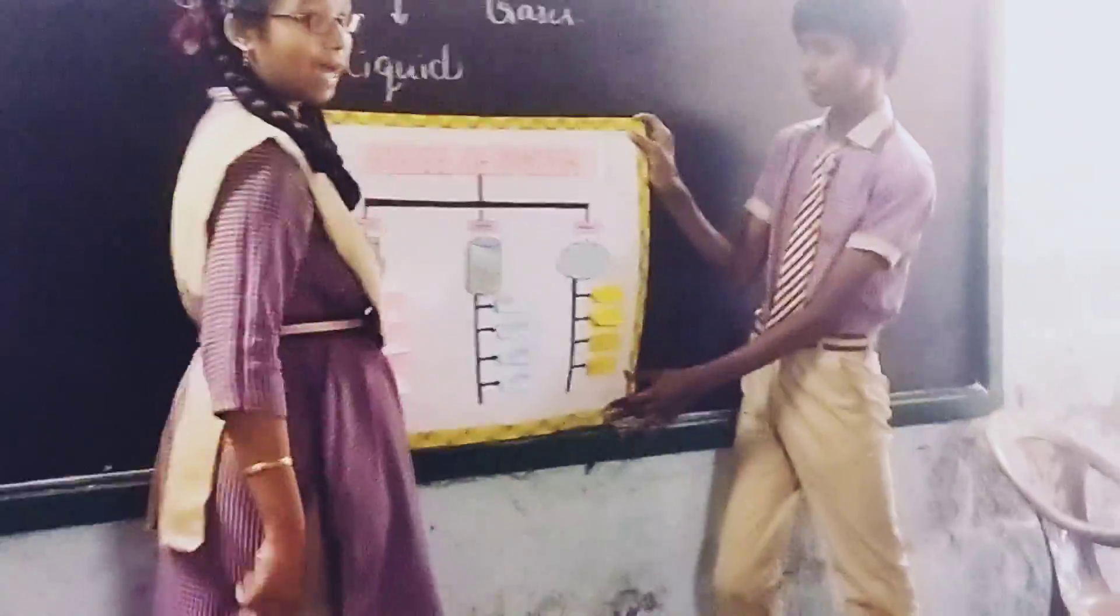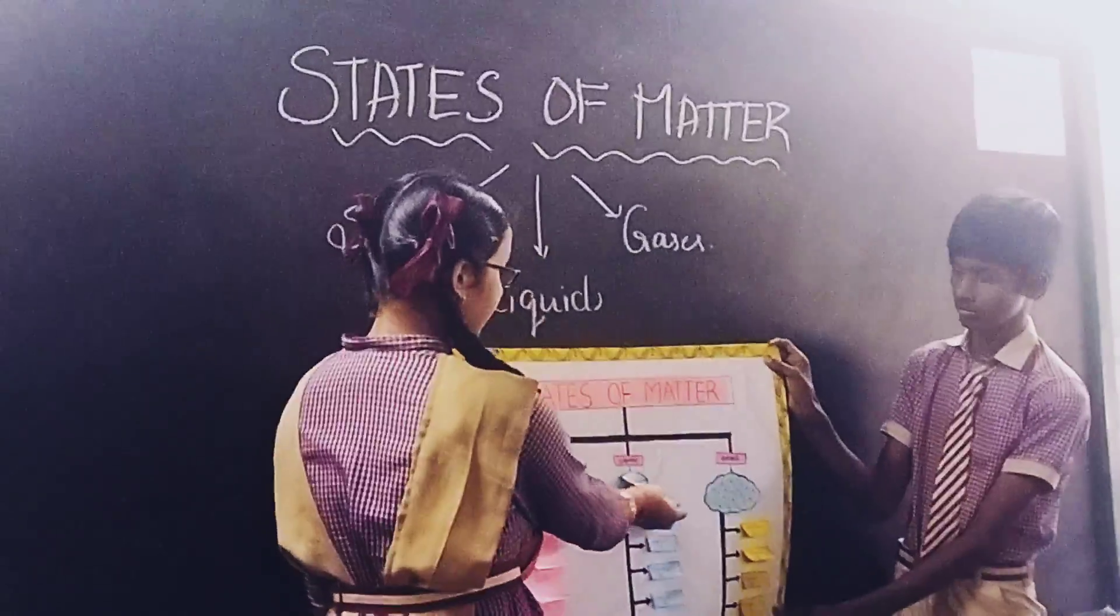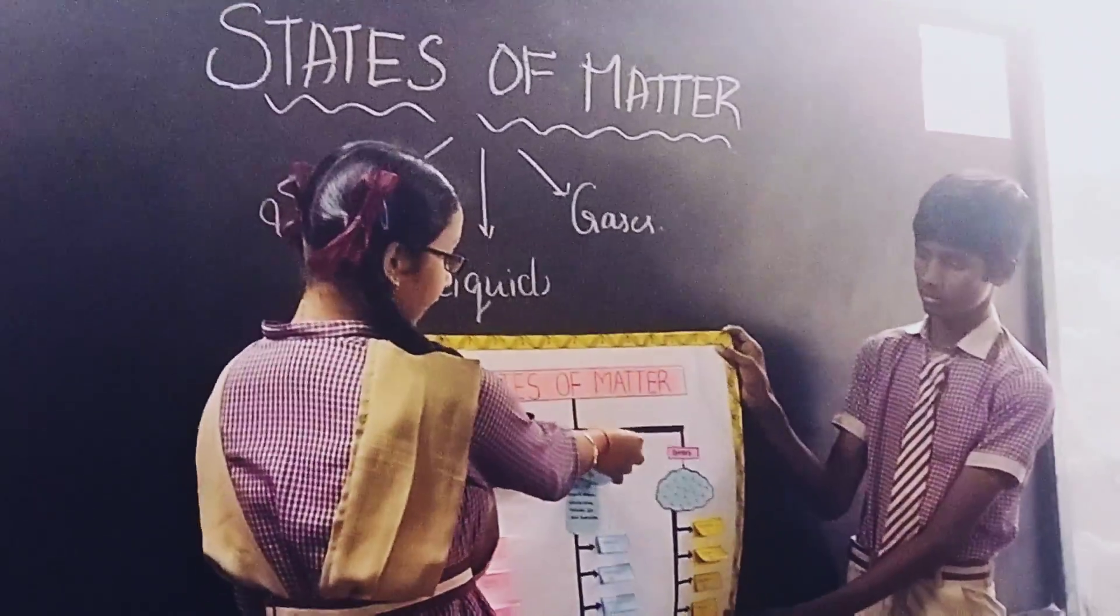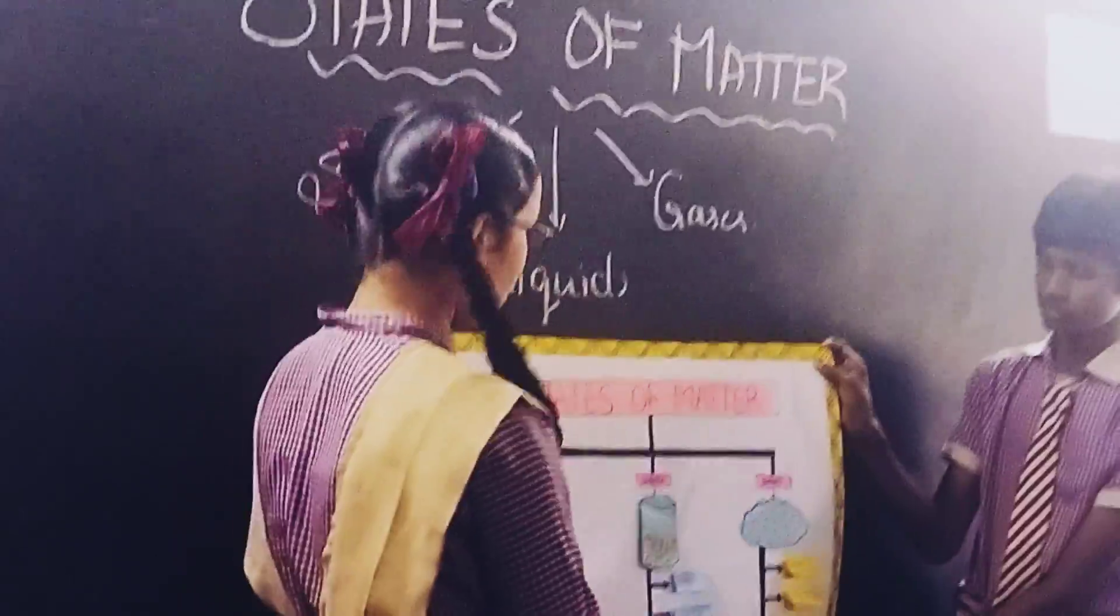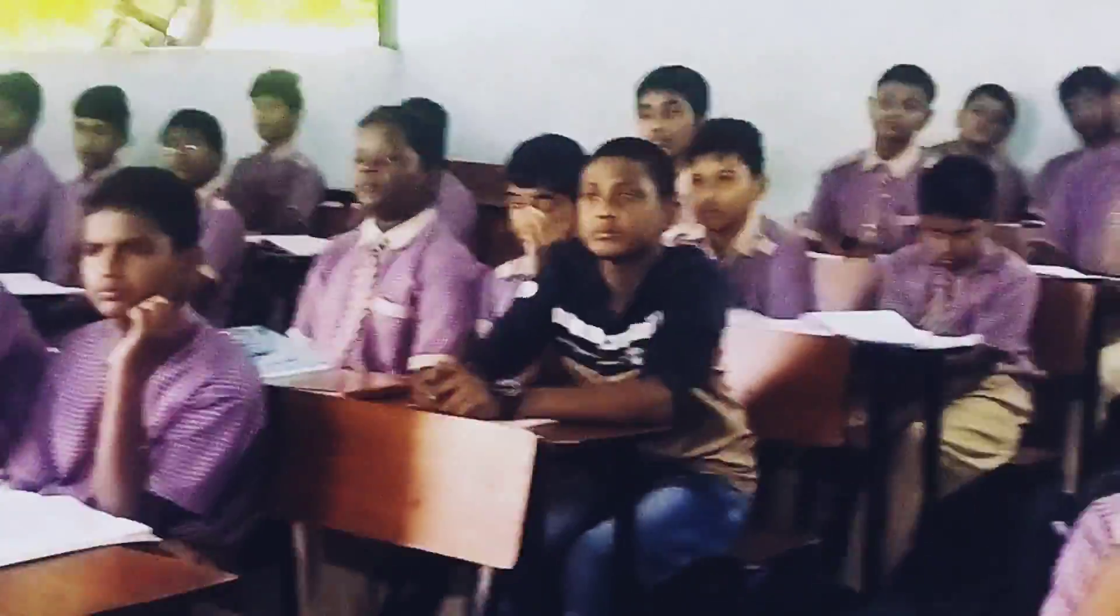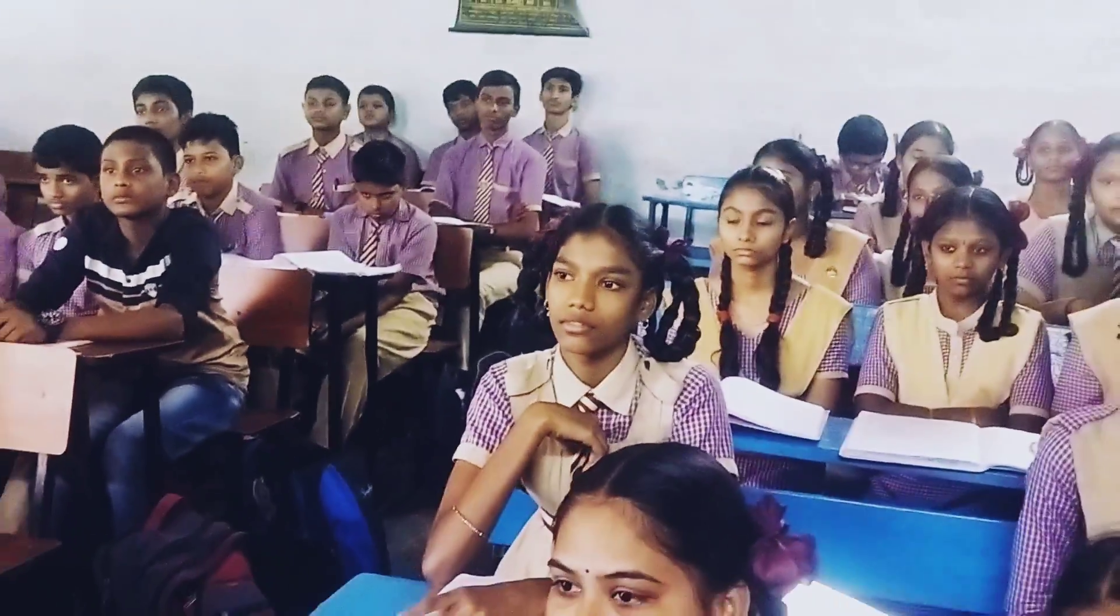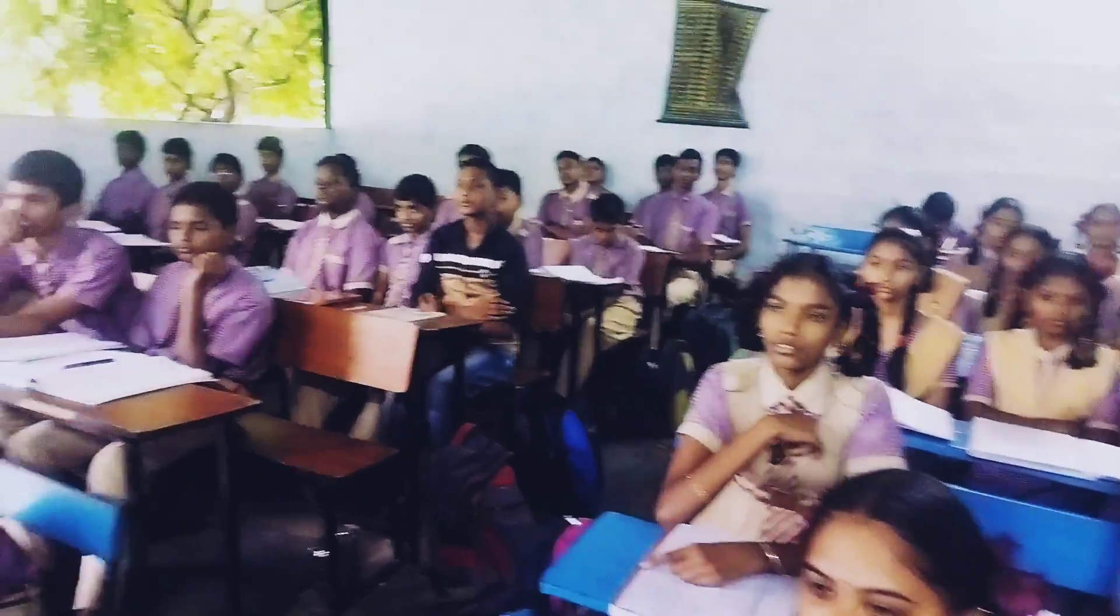Liquids can take their shape depending upon their container. Liquids have a fixed volume, and in liquids, molecular arrangement is farther from each other. Examples for liquids are water, milk, oil, juice, etc.